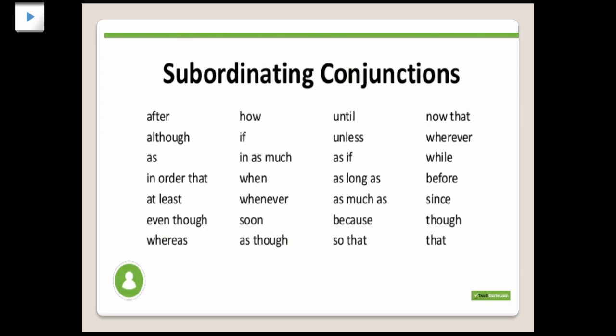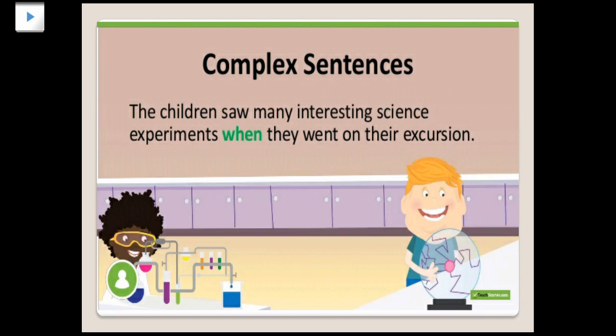These are the subordinating conjunctions. Here is another example of a complex sentence: 'The children saw many interesting science experiments when they went on their excursion.' The first part, the main clause, gives a complete meaning, whereas the second part, 'they went on their excursion,' doesn't give a complete sense on its own — we don't know who 'they' are. So it is a dependent clause, joined by 'when.'